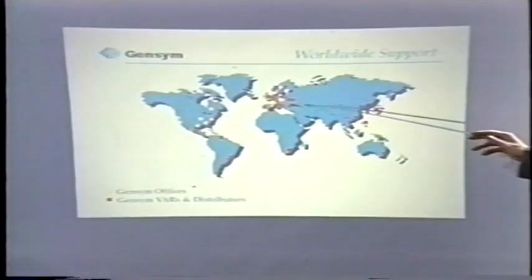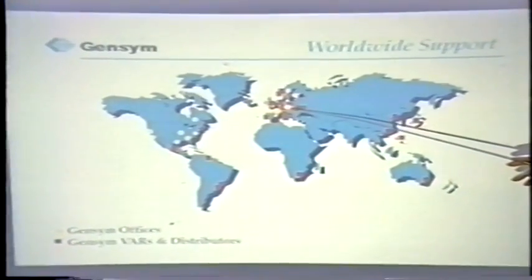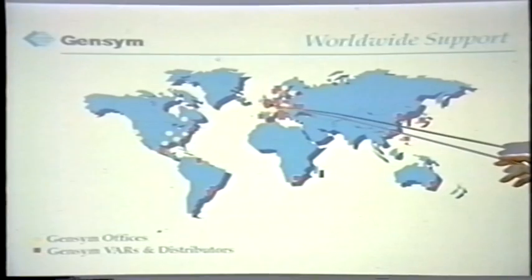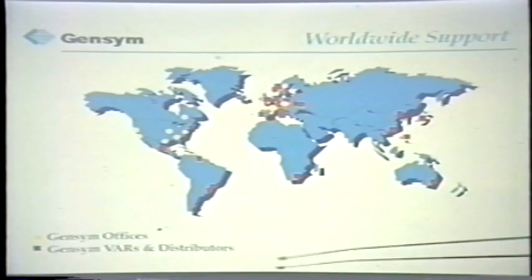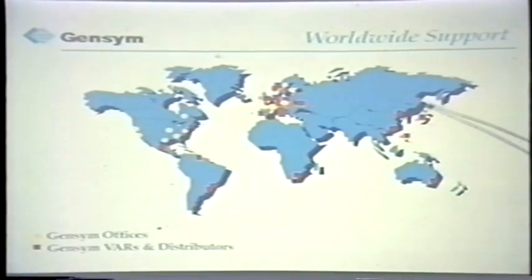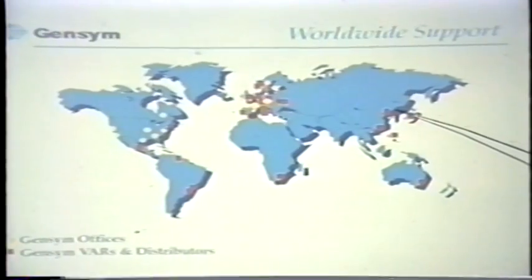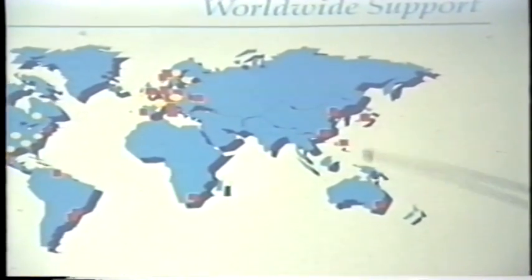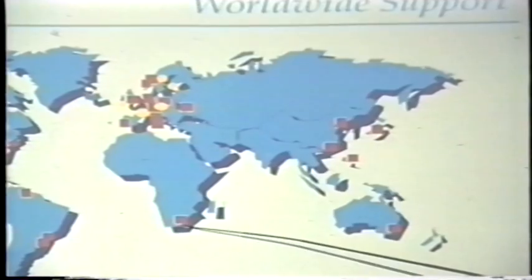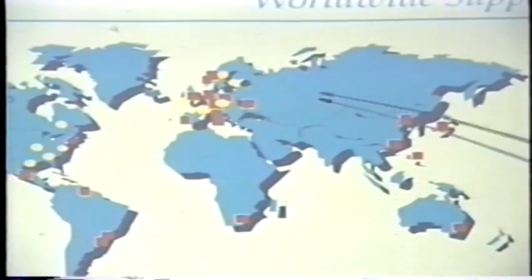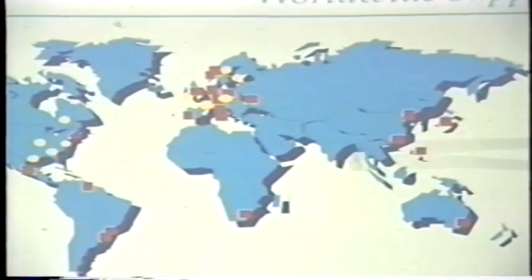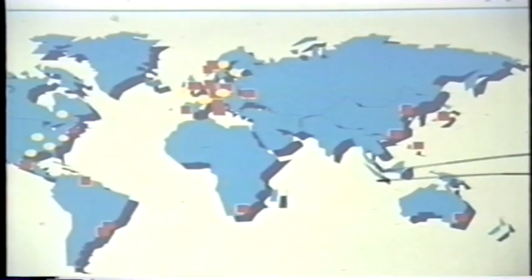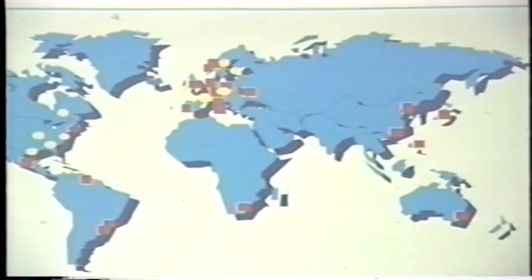In other areas of the world, we have offices across Europe in Munich, Paris, London, Norway, Sweden, and a new office opening in the Netherlands — six offices in Europe. We have a new office opened in Korea as well. We have 85 support partners in 23 countries around the world who offer training and installation support in addition to reselling G2. So G2 is sold and supported on a worldwide basis.